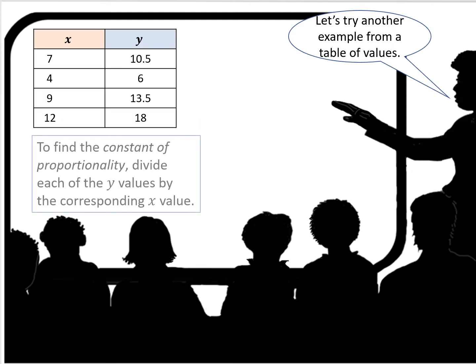Let's try another example from a table of values. Here we have x and y values. To find the constant of proportionality, divide each of the y values by the corresponding x value.